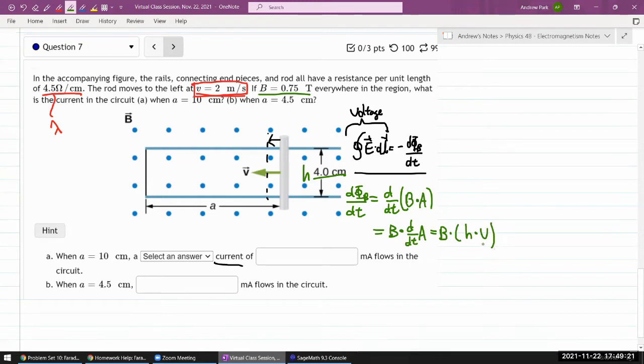And since my speed of V is uniform, it's constant, height of the rail is constant, magnetic field is constant. So the value of the voltage is the same up until the point when this rod finally closes up and the magnetic flux no longer changes. So let me calculate that voltage first, and then I think I can figure out the resistance, and from voltage and resistance, calculate the current.